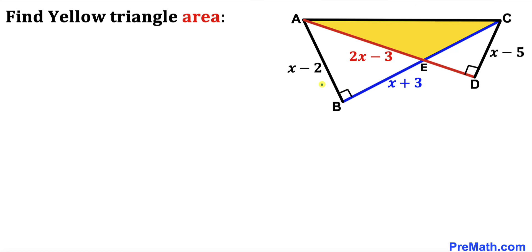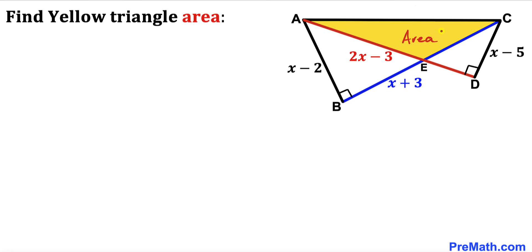Welcome to pre-math. In this video we have got these two right triangles, triangle ABC and triangle ADC, put together such that we get this yellow triangle AEC. Side length AB is represented by x minus 2, side length CD is represented by x minus 5, side length AD is represented by 2x minus 3, and side length BC is represented by x plus 3. Our task is to calculate the area of this yellow triangle.